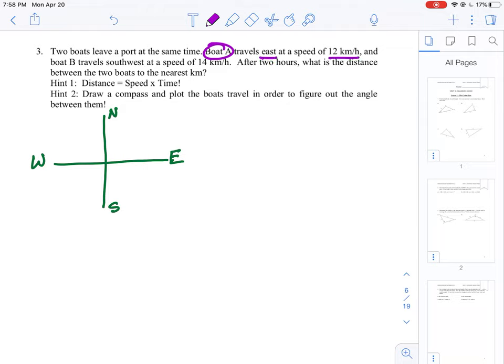Boat A is the first thing we're looking at. It travels east at a speed of 12 kilometers per hour. I'll just put a dot here. Remember, the center of the axis is the zero-zero mark, and at some point this boat A is going to be at some distance. We'll mark that at A.